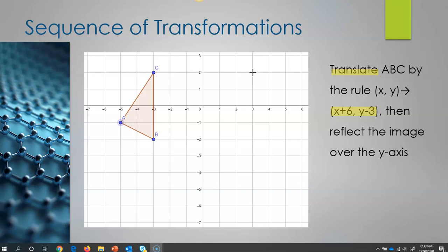And then it has to go Y negative 3, which is down 3. So 1, 2, 3. And so I'm going to put a dot right there. And then that is going to be my point C prime.